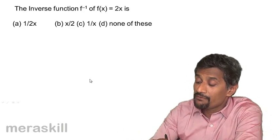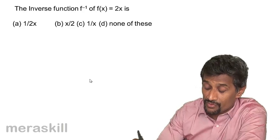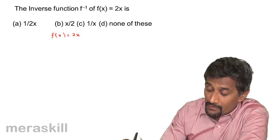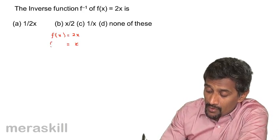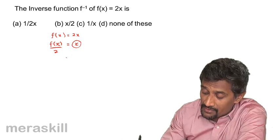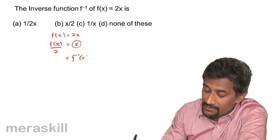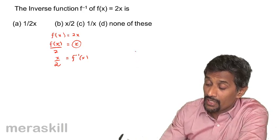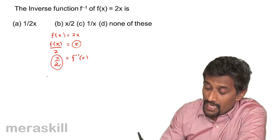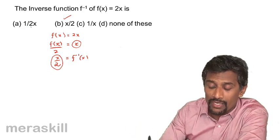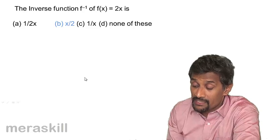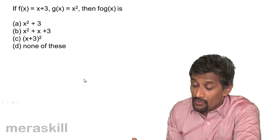Finding the inverse function: f(x) = 2x. From f(x) = 2x, we get x = f(x)/2. To find the inverse, replace x with f⁻¹(x) and f(x) with x, giving f⁻¹(x) = x/2. So the inverse function of 2x is x/2.